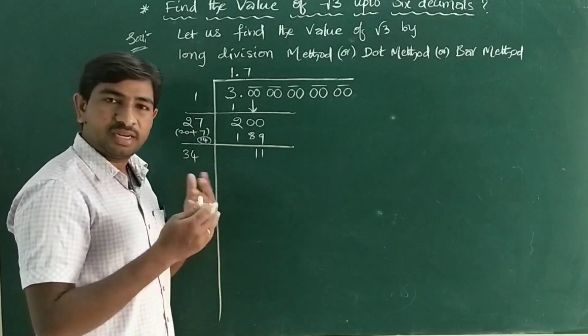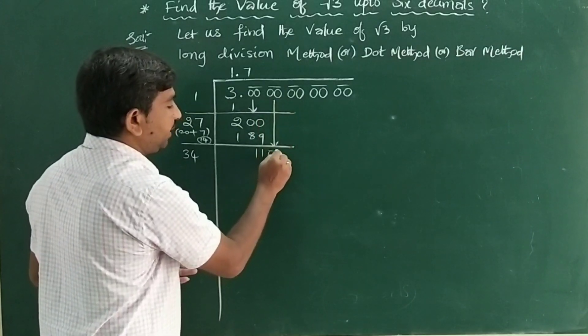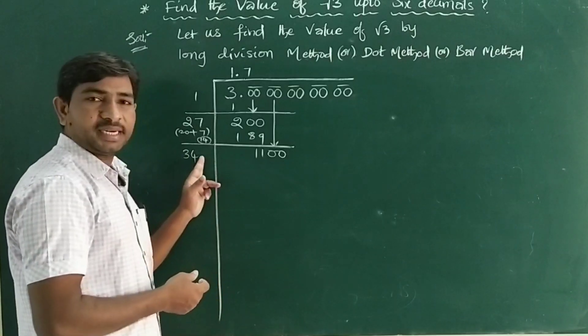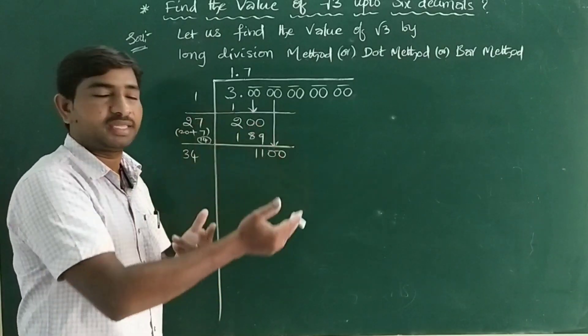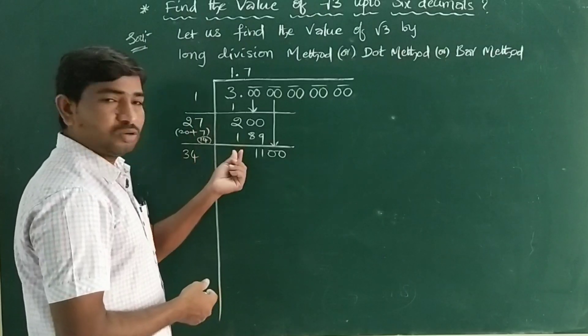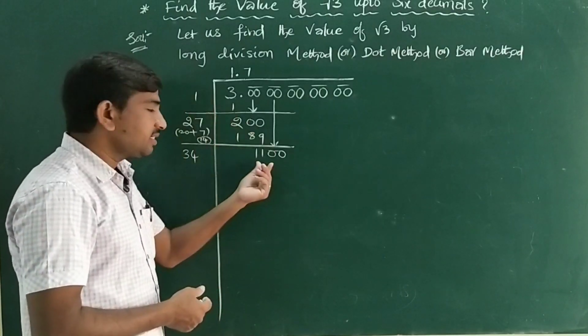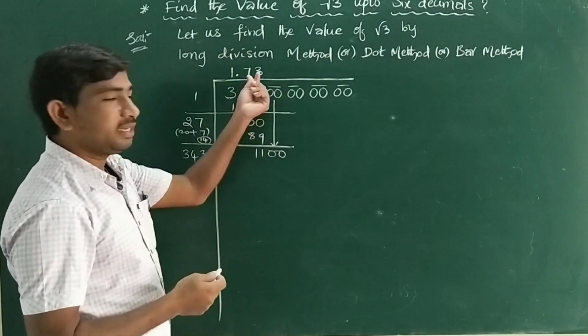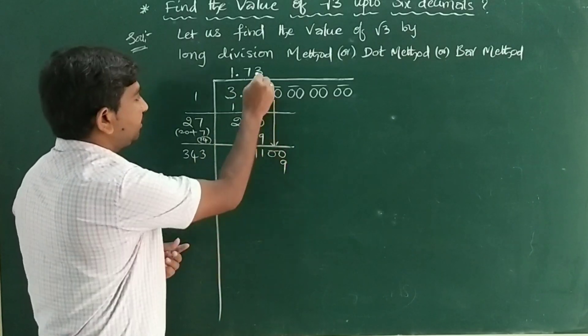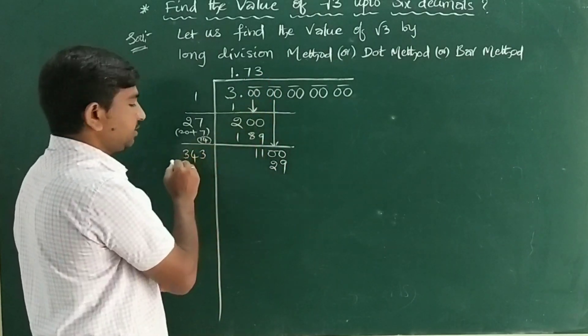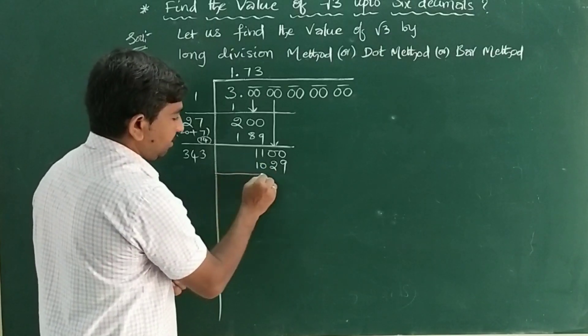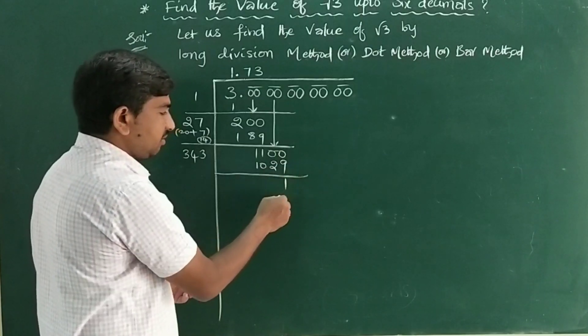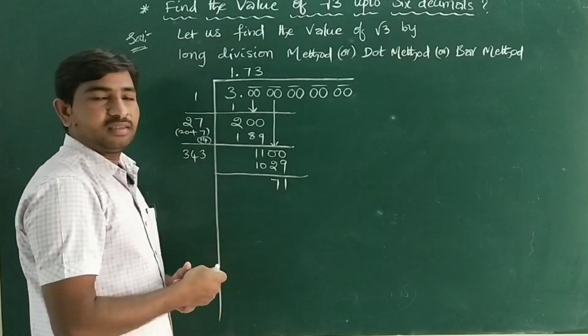34, try to understand this is most important. 11 is very less than 34, so carry one more pair. It becomes 1100. If you write any number beside 34, it becomes 340-something. Now choose: 343×3. 3×3 is 9, 3×4 is 12 plus 1 is 13, 3×3 is 9 plus 1 is 10. Subtracting: 10 minus 9 is 1, 9 minus 7 is... we get 71.